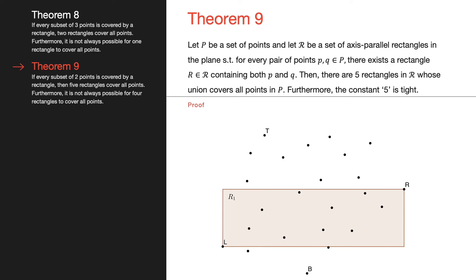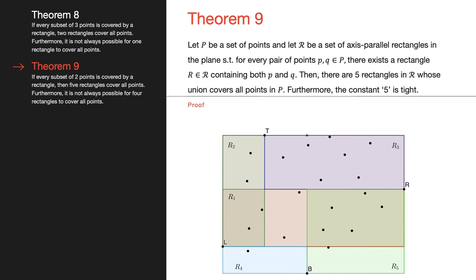We will now cover some theorems related to axes-parallel rectangles in the plane. Theorem 9 states that if every pair of points is contained in an axes-parallel rectangle, then there are five rectangles that cover all points. Let r1 be the rectangle that covers the leftmost and rightmost points. Any point not in r1 will be either above or below r1. If above, the rectangles covering the leftmost-and-topmost and rightmost-and-topmost points together cover that point. Similarly, if below, the rectangles covering the leftmost-and-bottommost and rightmost-and-bottommost points cover it.